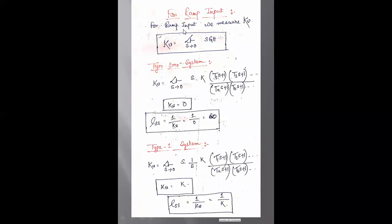Now for ramp input, we concentrate on the velocity error coefficient Kv equals limit s tends to 0 of s·GH. For a type 0 system, as s tends to 0 this value goes to 0, so the steady state error ESS equals 1/Kv equals 1/0 equals infinity. For a type 0 system with ramp input, velocity error coefficient is 0 and steady state error is infinity.